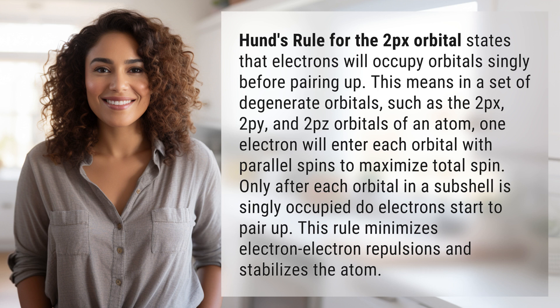one electron will enter each orbital with parallel spins to maximize total spin. Only after each orbital in a subshell is singly occupied do electrons start to pair up. This rule minimizes electron-electron repulsions and stabilizes the atom.